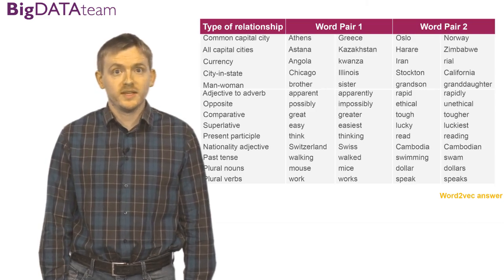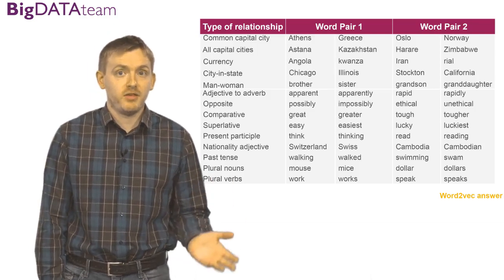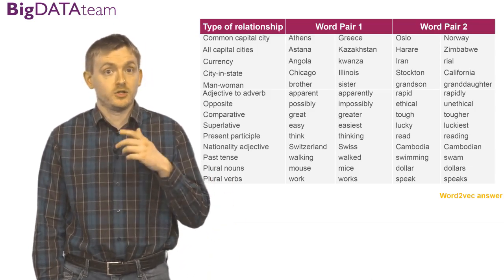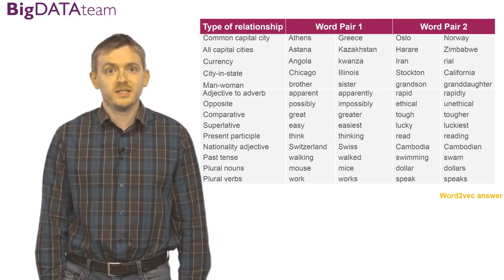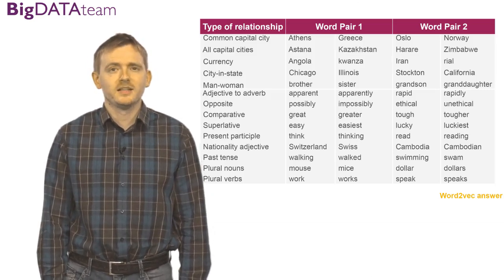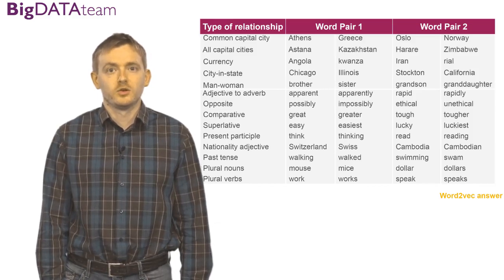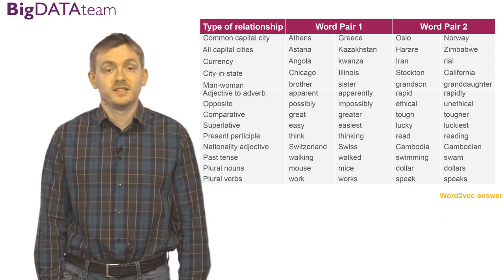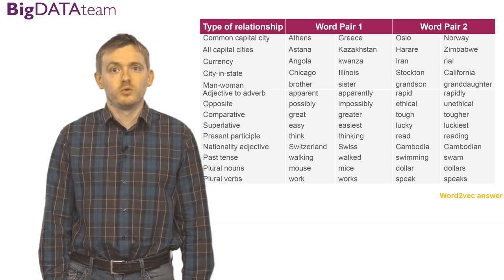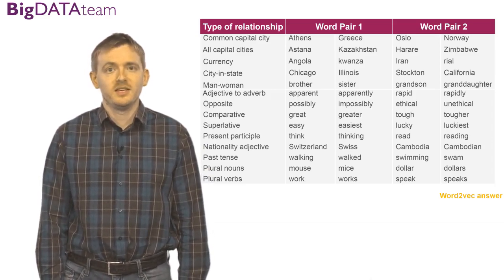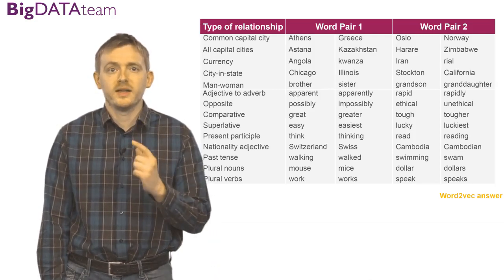The Word2Vec model can guess associations. If you ask the Word2Vec model Athens, Greece, and Oslo, then the answer is correct—it is Norway, because Oslo is the capital of Norway. And it can capture even more complex associations, rules like currency, city, state, man or woman, adjective to verb, and so on. It means that vectors which are learned by the Word2Vec model are very accurate.